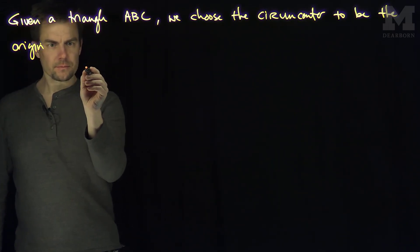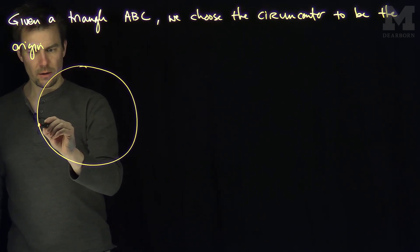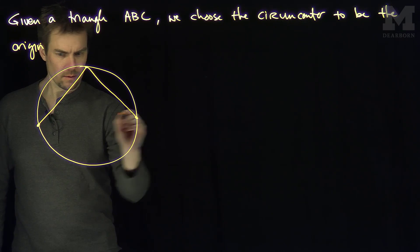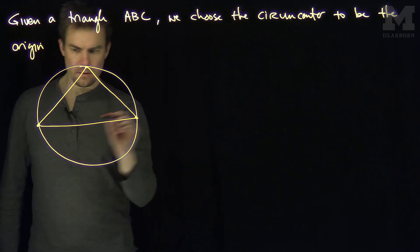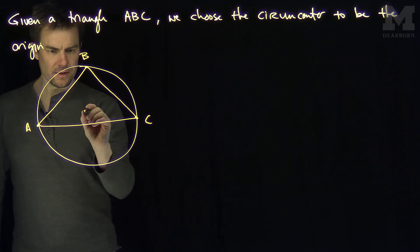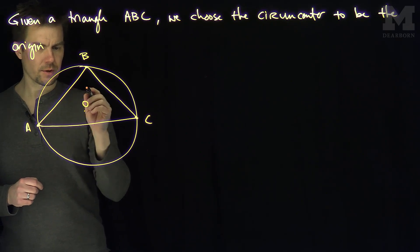So in other words, what we have is this. We have a triangle A, B, C, and the center of the circumcircle is going to be the origin for our vector configuration.